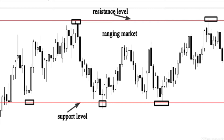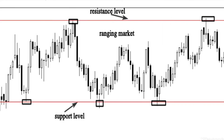This chart shows a ranging market — the price is bouncing between horizontal support and resistance levels. The difference between trending and ranging markets is that trending markets move by forming a pattern of higher highs and higher lows in an uptrend, and lower highs and lower lows in a downtrend. Ranging markets, however, tend to move horizontally between key support and resistance levels.